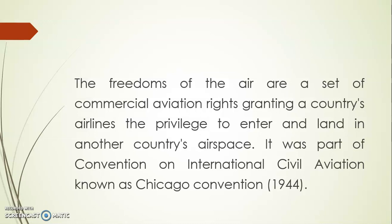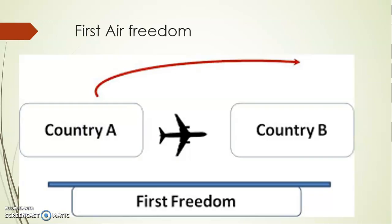The First Air Freedom allows an airline of country A to travel across the airspace of country B. For example, if India wants to fly to France or a European country, it can travel across the airspace of the UAE or any intermediate country. So country A can travel to country C passing through the airspace of country B.